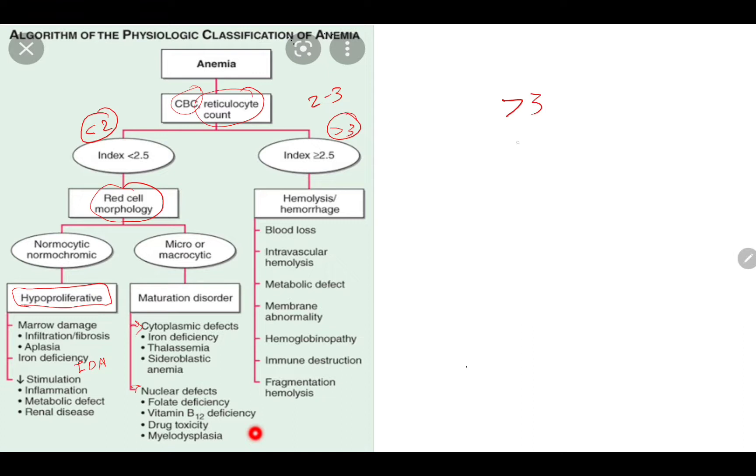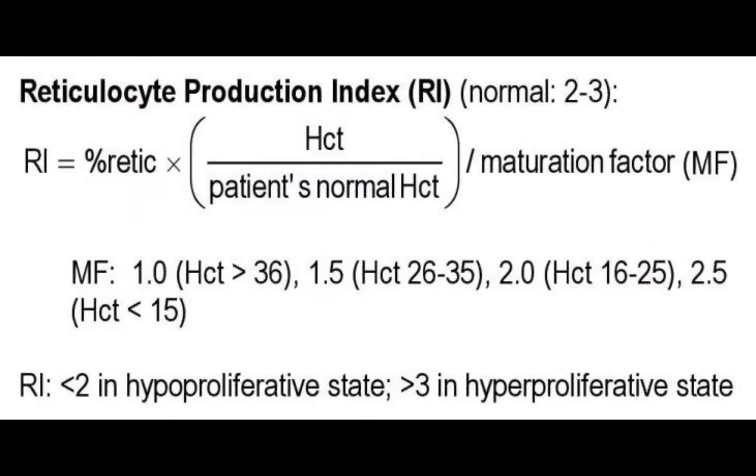If the index is more than 3, then it's hyperproliferative. Hyperproliferative is mainly in case of hemorrhage or hemolysis, like blood loss, intravascular hemolysis, metabolic defect, membrane abnormality, any kind of hemoglobinopathies, immune destruction, or fragmentation hemolysis. So here is the easiest flowchart for the clinical application of RI or RPI, which is very important for the reticulocyte application. Thank you.